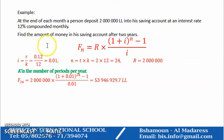Find the amount of money in his saving account after two years. In two years, how many payments are there? Since he pays each month, in one year we have 12 payments, and in two years, 24 payments. So i equals 0.12 over 12, gives us 0.01, and 24 periods, and each payment equals 2 million Lebanese lira.